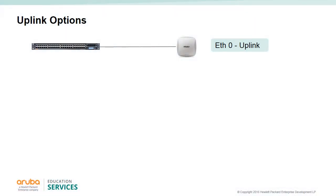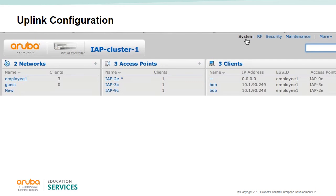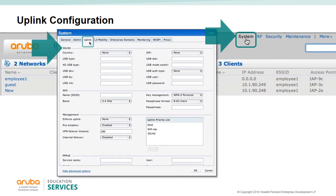Ethernet 0 is an uplink by default. There are two other uplink choices: 3G/4G and Wi-Fi, both of which must be configured. You can set up more than one uplink and specify a primary uplink. If the main uplink fails, you can preemptively select a second and third backup link. Preemption can be set so that if the main uplink returns to service, the IAP reverts to it. From the System and Uplink tab you can configure the 3G/4G USB and Wi-Fi settings, with a priority list to enforce a specific uplink type.